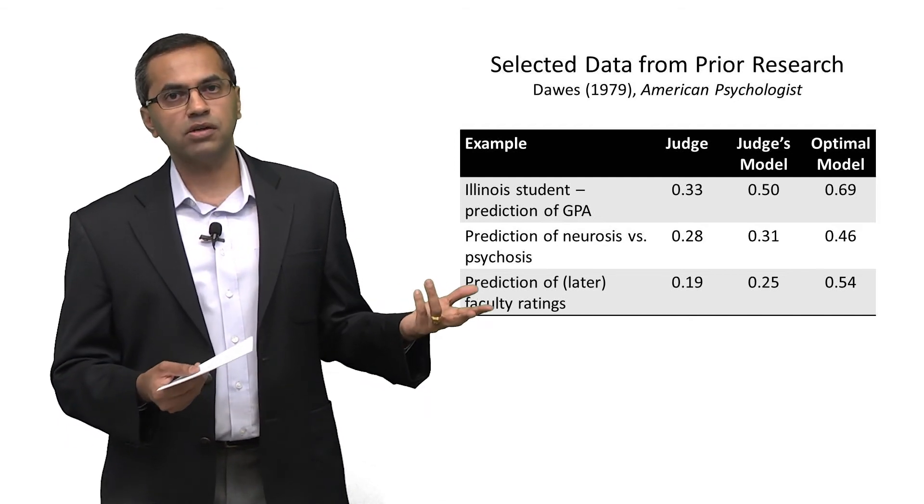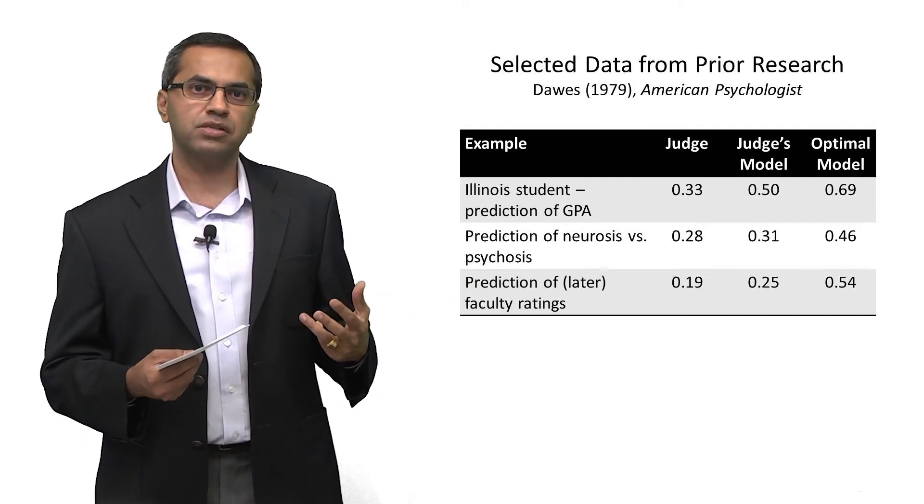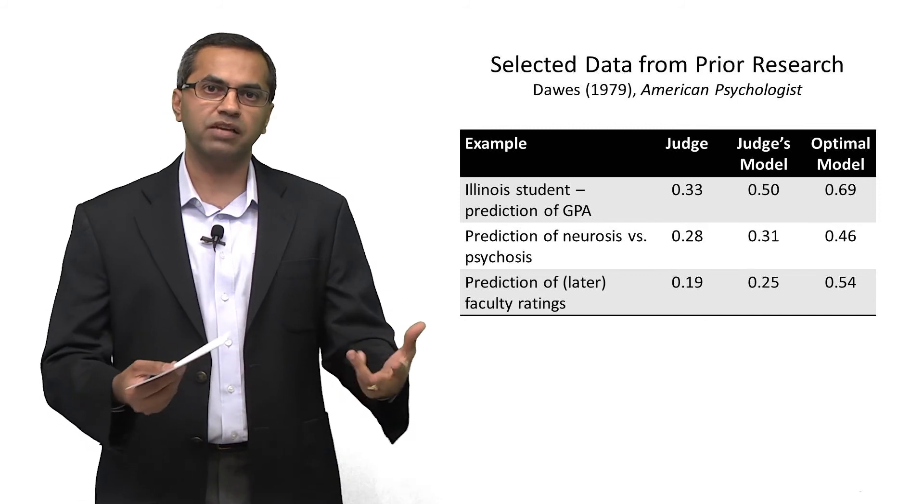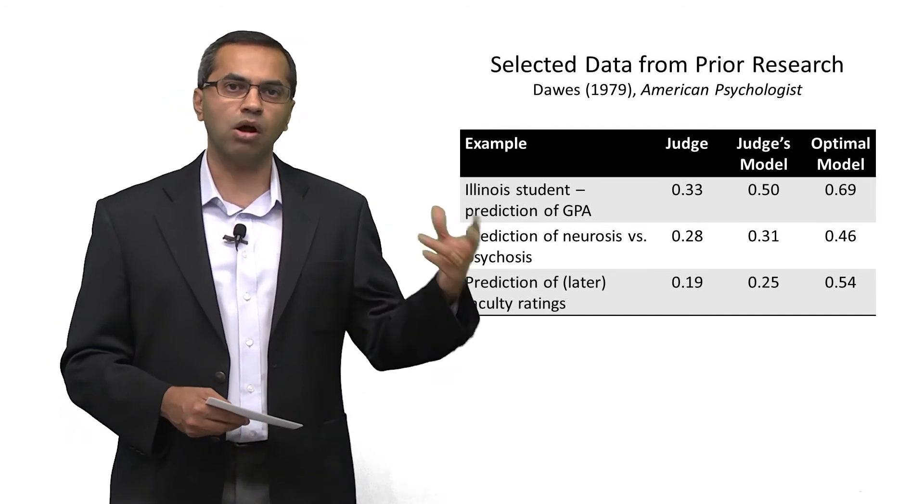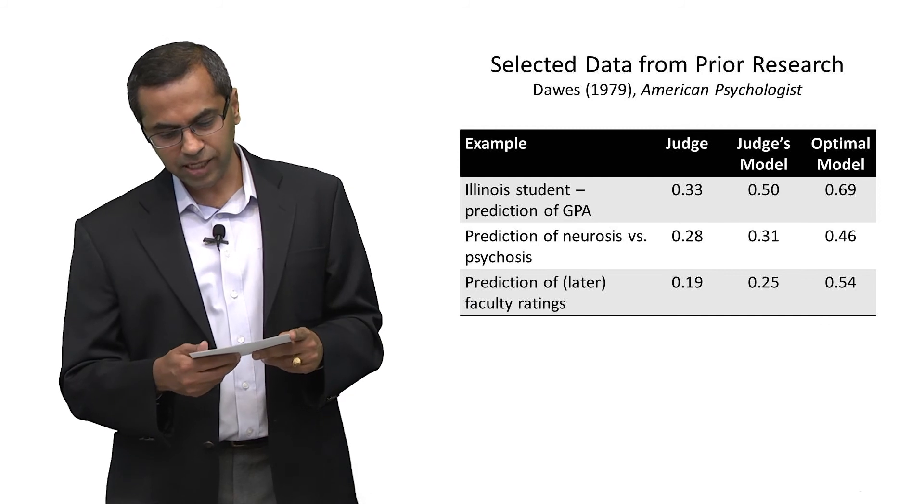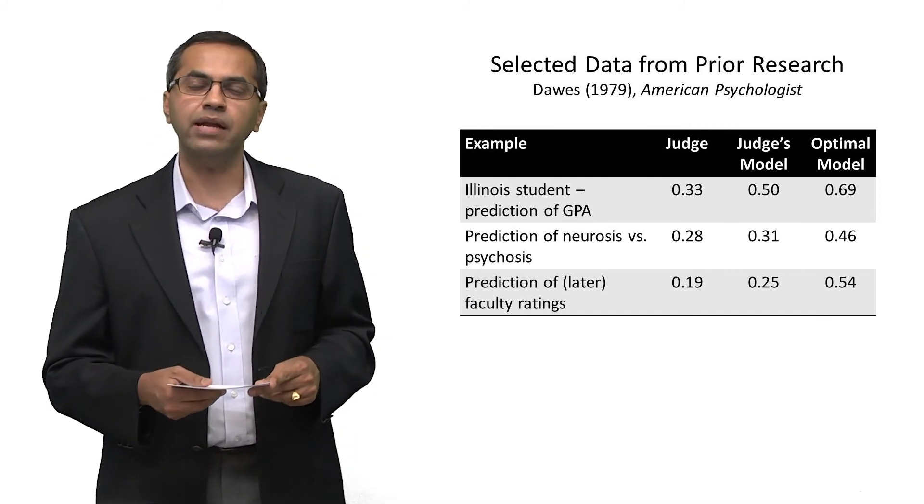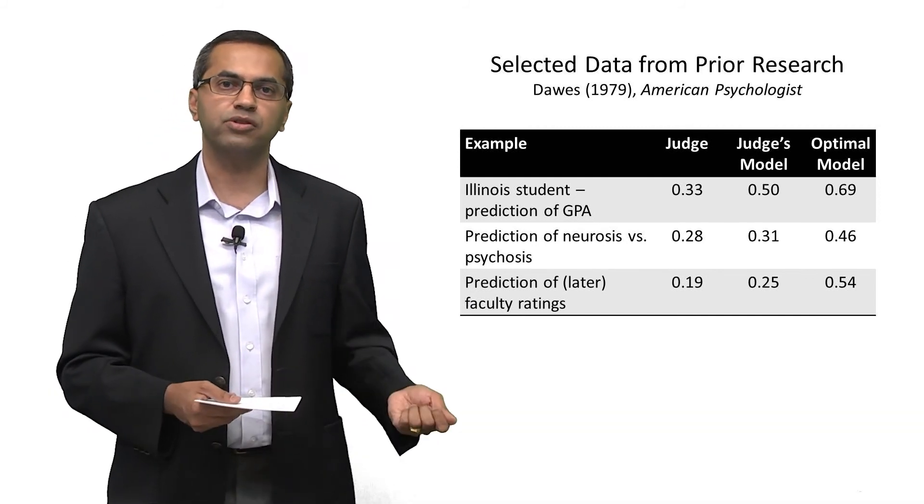Likewise, a number of doctors were asked to make predictions about a patient who had a given set of symptoms. Was this patient neurotic or psychotic? And it turns out that the expert's correlation was 0.28, the model of the expert 0.31.